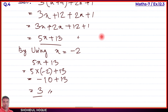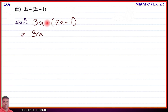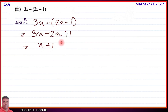Part number two solved. Now part number three: the expression is 3x minus (2x minus 1). We open the bracket — since there is a minus sign outside, we change the signs inside: minus 2x becomes minus 2x, and minus 1 becomes plus 1. So we get 3x minus 2x plus 1, which simplifies to x plus 1.